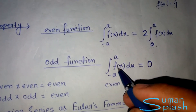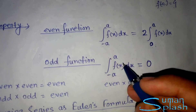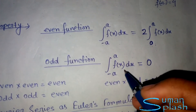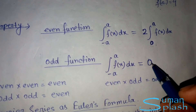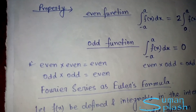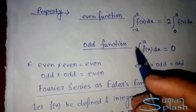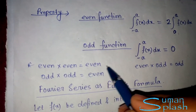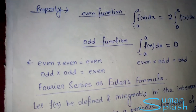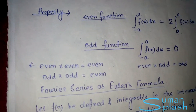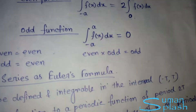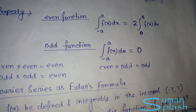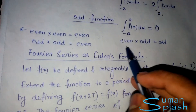For an odd function, the integral from −a to a equals zero. Additionally, the product of two even functions is always even, and the product of two odd functions is also always even. However, when we multiply an even function and an odd function, the result is always an odd function. These properties are very helpful for problem solving.